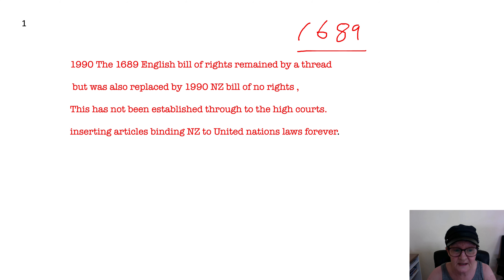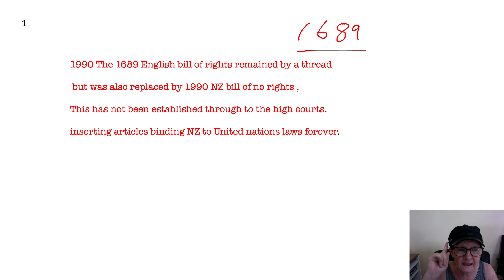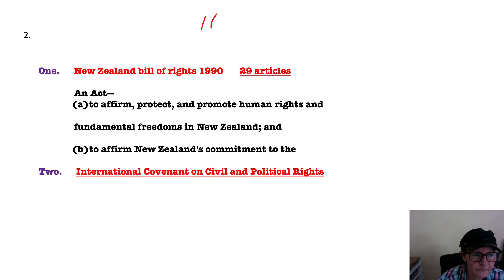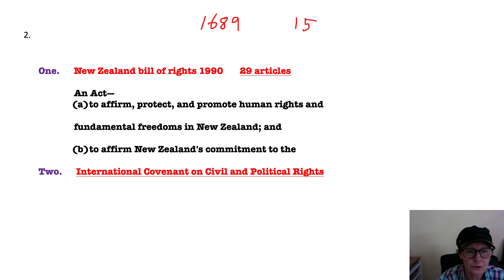I'm not going to talk about what rights you've got today. What I'm going to show you is how you are tied to thousands of laws outside of New Zealand, all because of one tiny little law in this 1990 Bill of Rights. New Zealand, Australia, England, Canada, and even America all originally came from the 1689 Bill of Rights, which has only 15 key rights. In New Zealand in 1990 they came up with the New Zealand Bill of Rights, which has 29 articles.